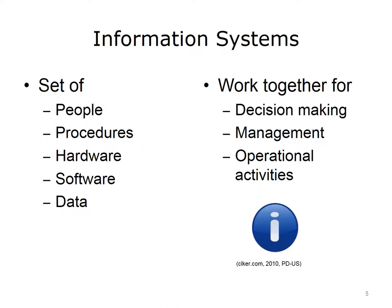An information system, or IS, is a collection of people, processes, procedures, hardware, software, and data, all working together to support decision-making, management, and operational activities. The system works together to generate information needed by the organization. It supports day-to-day information needs and long-term planning, and can be used by employees, business partners, clients, and customers of the organization.